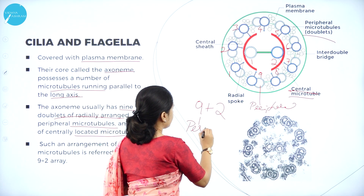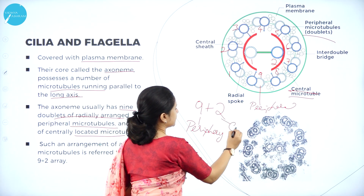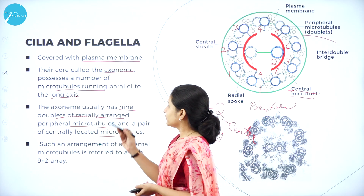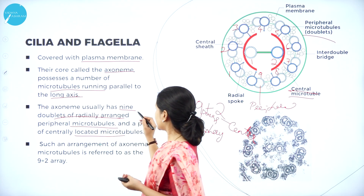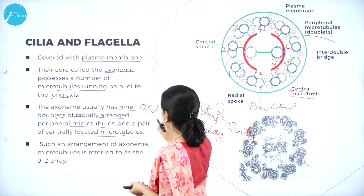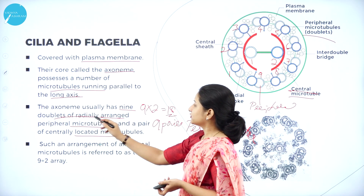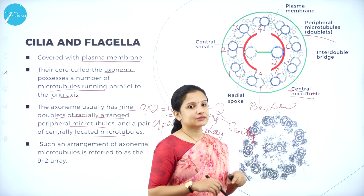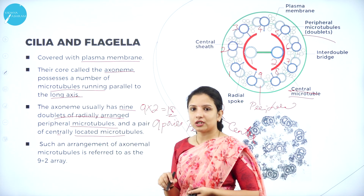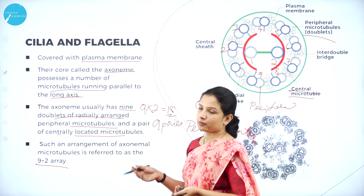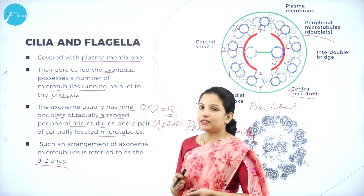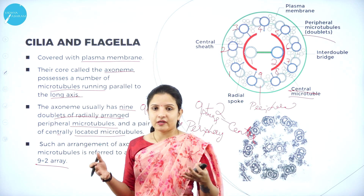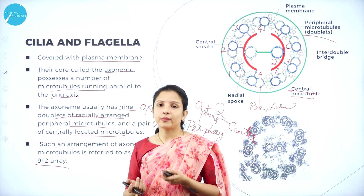In the 9+2 array: 9 pairs of microtubules are at the periphery — since they are in pairs, that gives 18 microtubules — and 2 are at the centre. The axoneme has 9 doublets of radially arranged peripheral microtubules and one pair of centrally located microtubules. Such an arrangement is called the 9+2 array of microtubules in cilia and flagella.